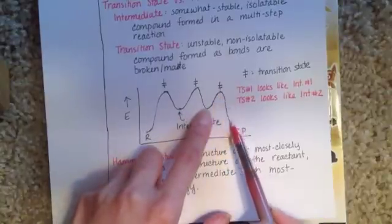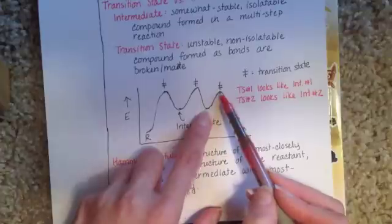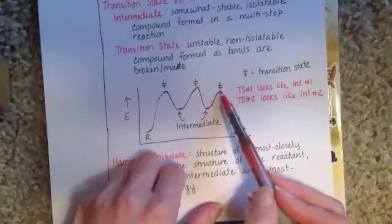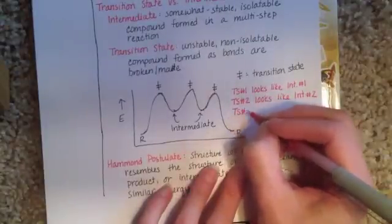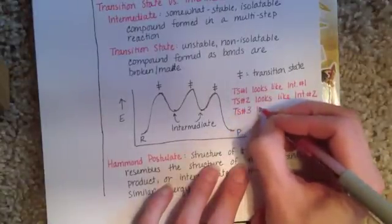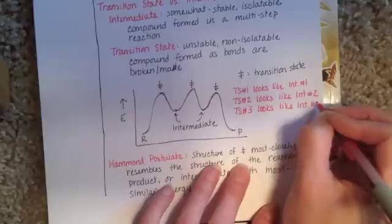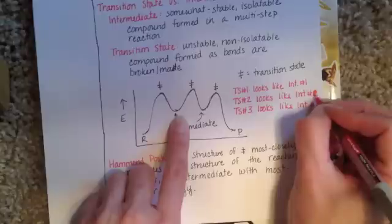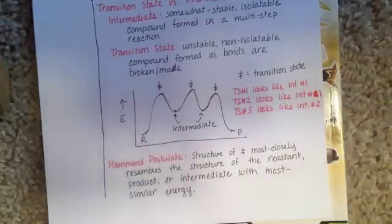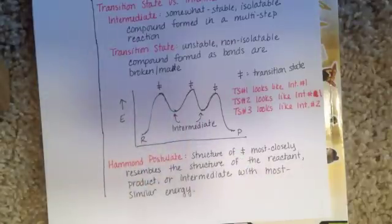The last transition state is going to look a little bit like intermediate two and a little bit like the product. Because it's closest in energy to intermediate two, its structure will resemble intermediate two. I should clarify — transition state number two looks most like intermediate number one; they're kind of close in energy but we'll go with intermediate one as the slightly higher energy species.